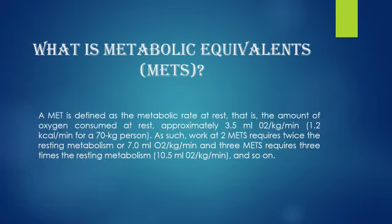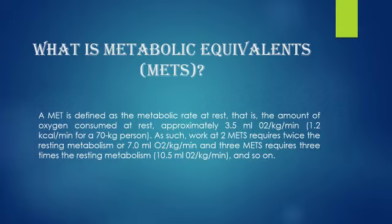What is Metabolic Equivalent (MET)? MET is defined as the metabolic rate at rest, i.e., the amount of oxygen consumed at rest — approximately 3.5 ml of oxygen per kg per minute, or 1.2 kcal per minute for a 70 kg person. Work at 2 METs requires twice the resting metabolism, or 7 ml of oxygen per kg per minute, and 3 METs requires 3 times the resting metabolism, i.e., 10.5 ml of oxygen per kg per minute, and so on.